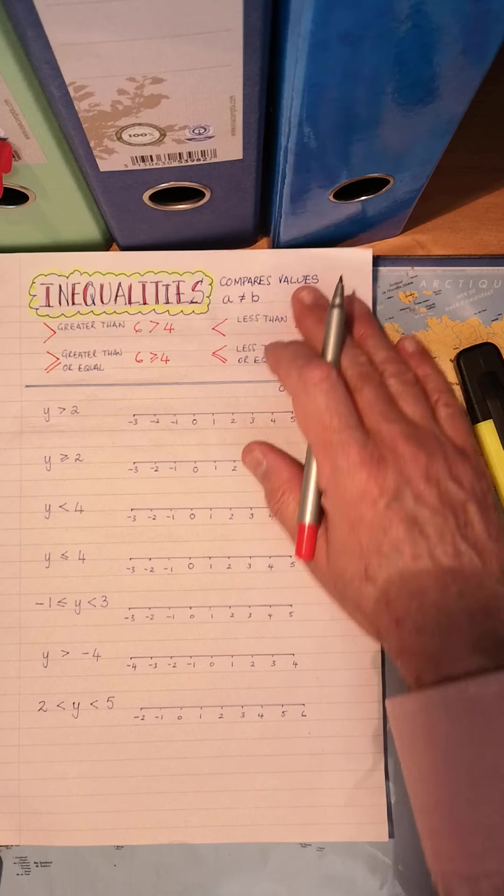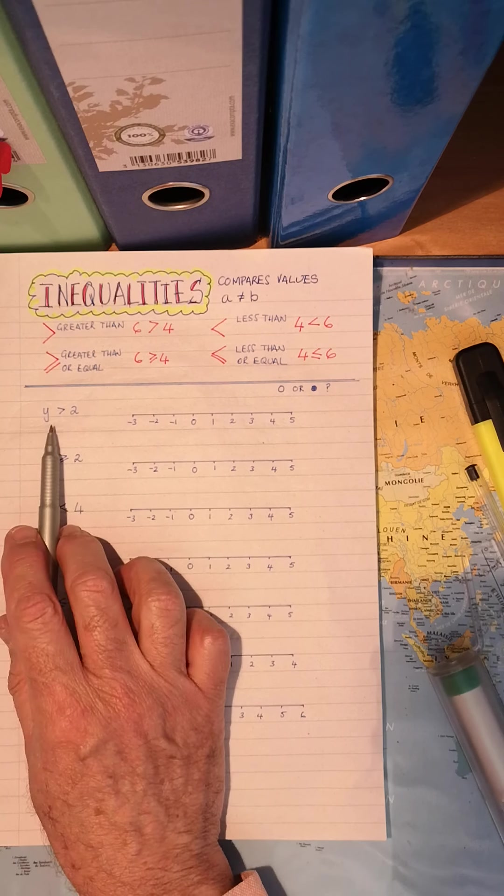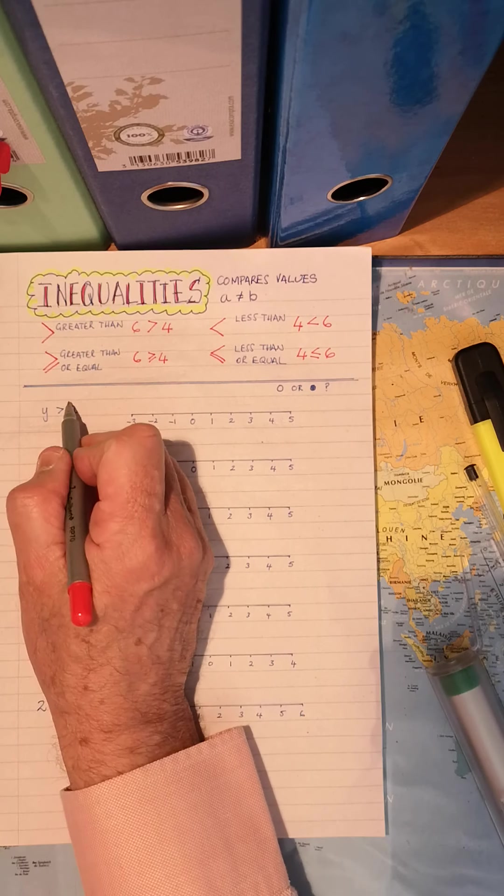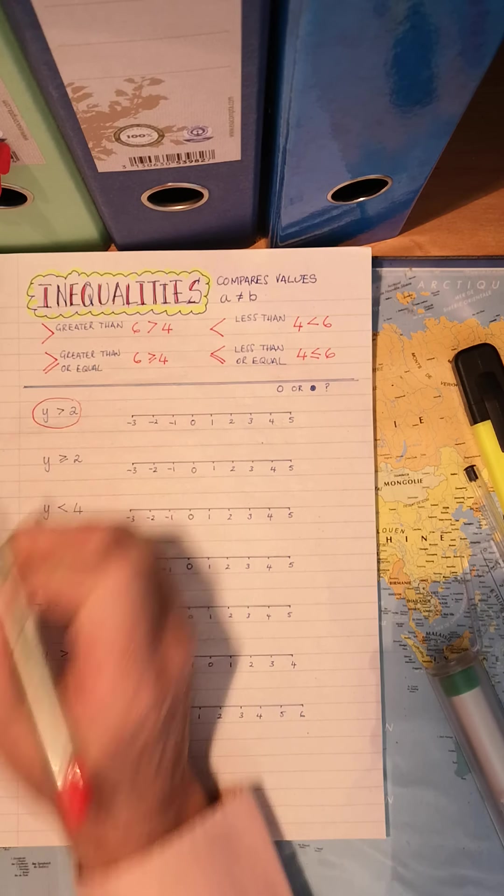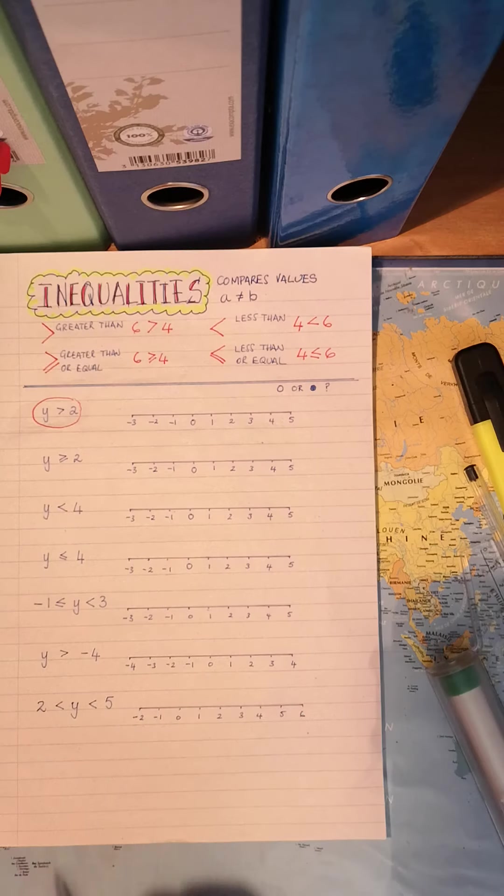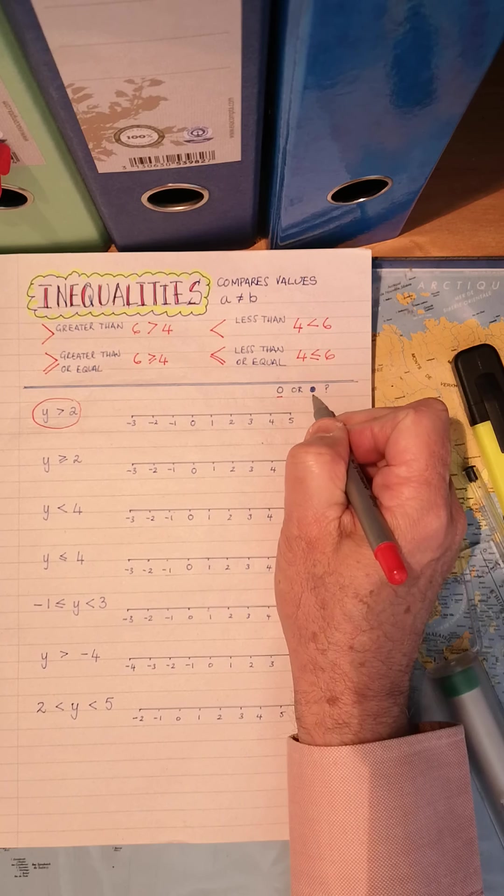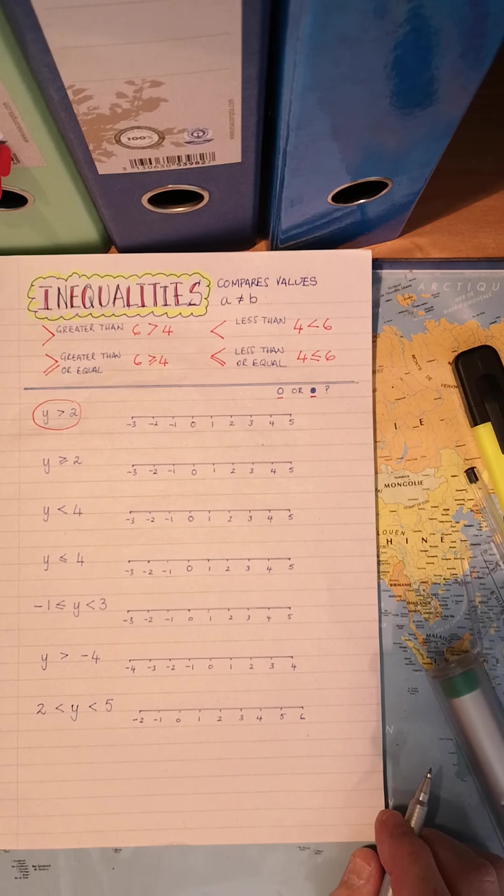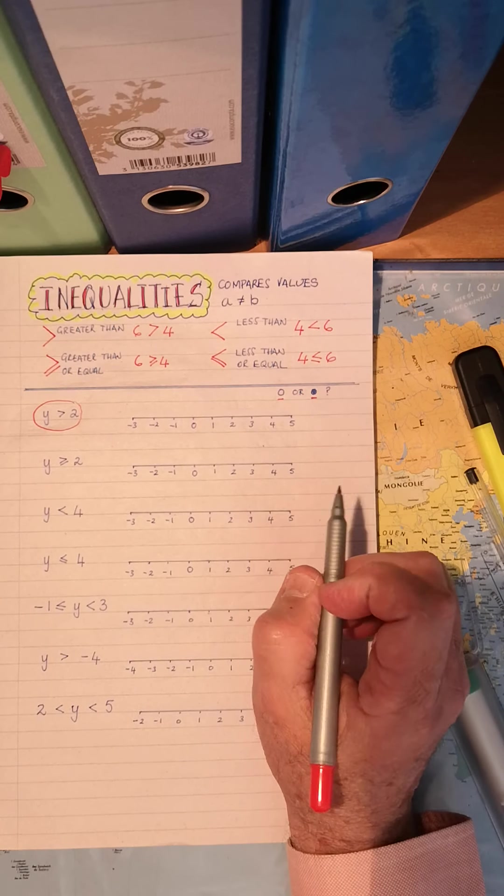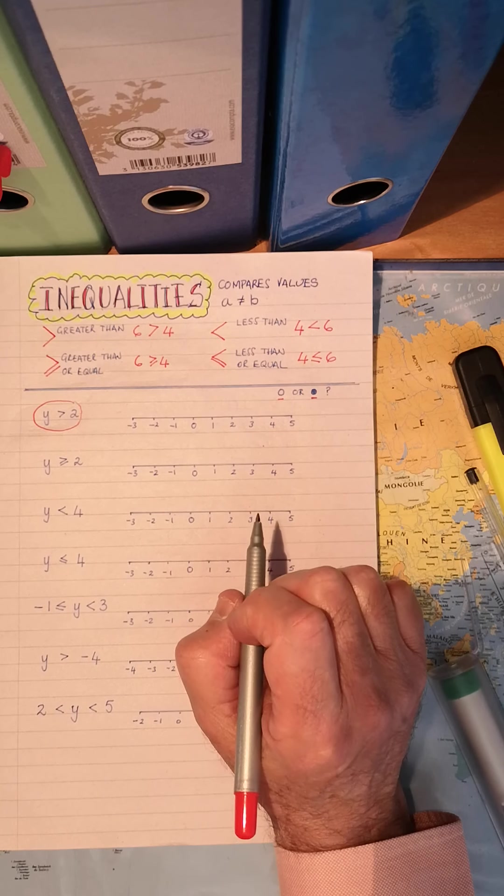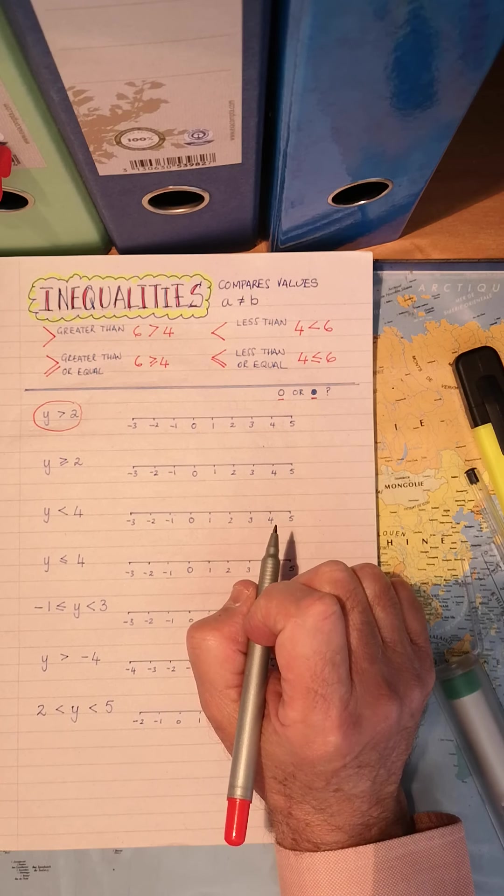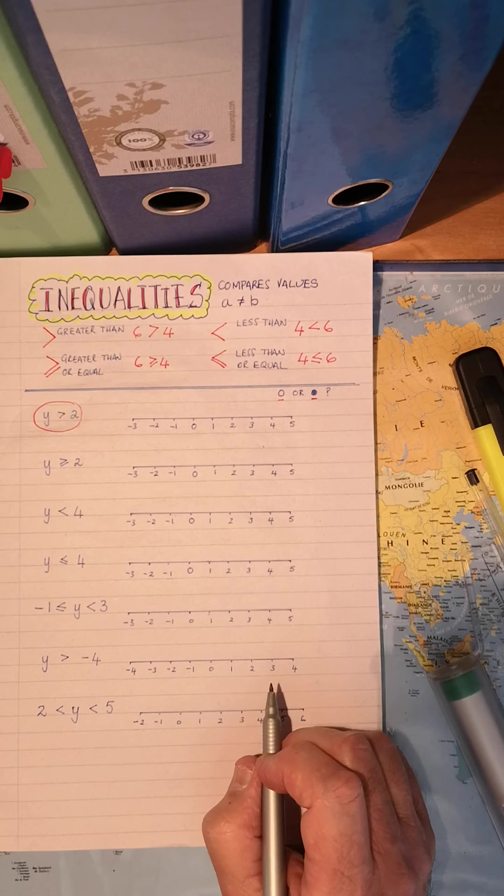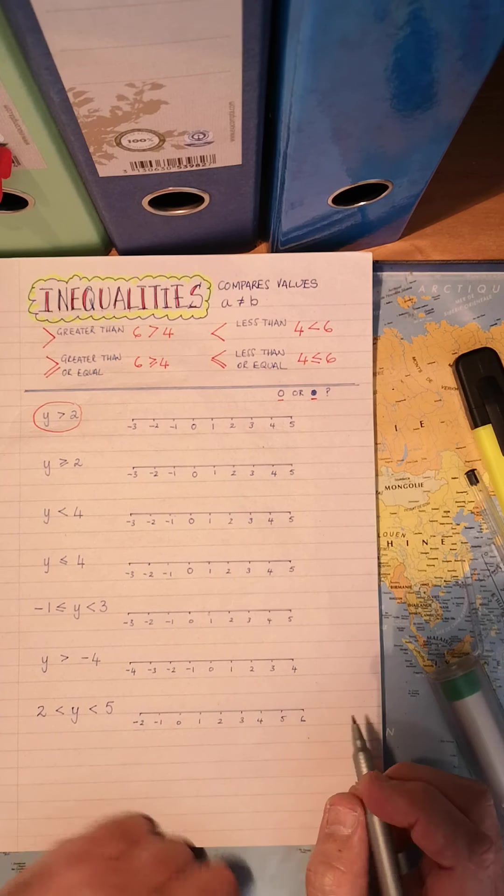Now let's go back and see how can we plot on a graph, a line graph, how do we plot this Y is bigger than two? Well, before we do that, we need to know what that stands for and what that one stands for. That, an open circle, does not include the number. If it is a closed circle, it includes the number. Let's see if you follow what I'm saying.